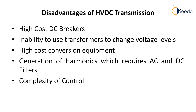Now let us discuss the disadvantages of HVDC. The first disadvantage is the high cost of DC breakers. DC breakers are costly, though advancements have addressed this — we will discuss that shortly. The second disadvantage is the inability to use transformers to change voltage levels. It is not possible to use a transformer for HVDC transmission, so increasing or decreasing voltage is not possible. This is one important disadvantage that cannot be overcome.